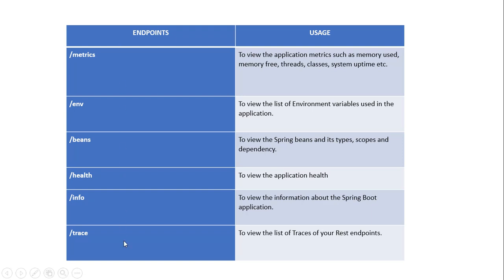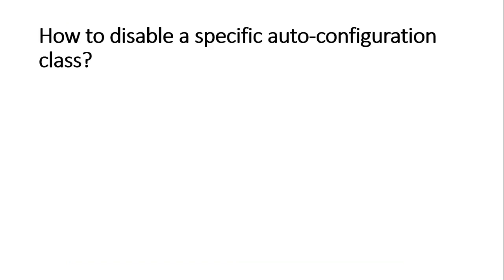For that, you have to subscribe to my YouTube channel. Now moving on to the next question: how to disable a specific auto-configuration? We can disable it by using exclude. We will discuss what exactly exclude is, how to use it, and why to use it in the Spring Tool Suite.